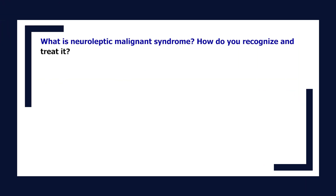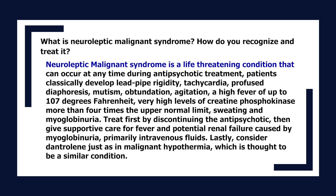What is neuroleptic malignant syndrome? How do you recognize and treat it? Neuroleptic malignant syndrome is a life-threatening condition that can occur at any time during antipsychotic treatment. Patients classically develop lead pipe rigidity, tachycardia, profuse diaphoresis, mutism, obtundation, agitation, high fever up to 107°F, very high levels of creatine phosphokinase (more than 4 times the upper normal limit), sweating, and myoglobinuria. Treat first by discontinuing the antipsychotic, then give supportive care for fever and potential renal failure caused by myoglobinuria — primarily intravenous fluids. Lastly, consider dantrolene, just as in malignant hyperthermia, which is thought to be a similar condition.